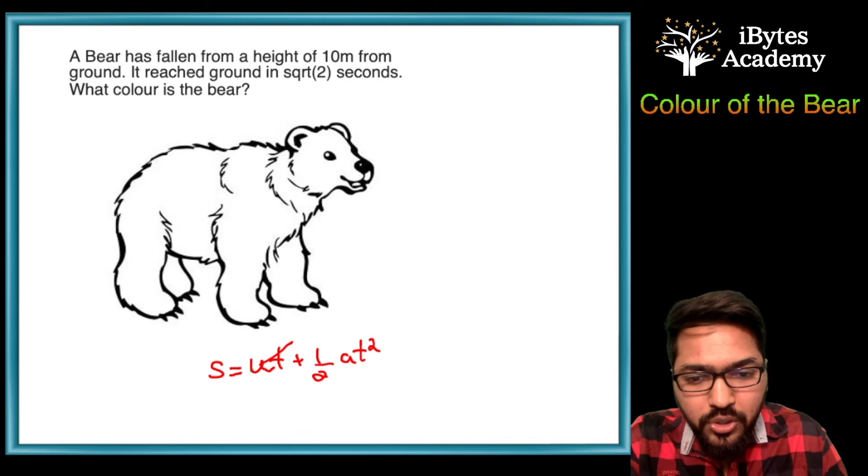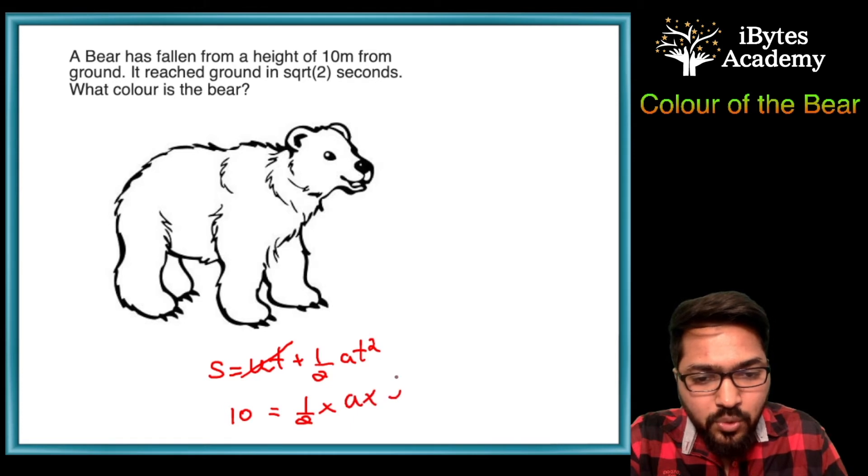So obviously S equals UT plus half AT squared. Now since it's a free fall, U is going to be 0. S is 10, half into A into root 2 squared.